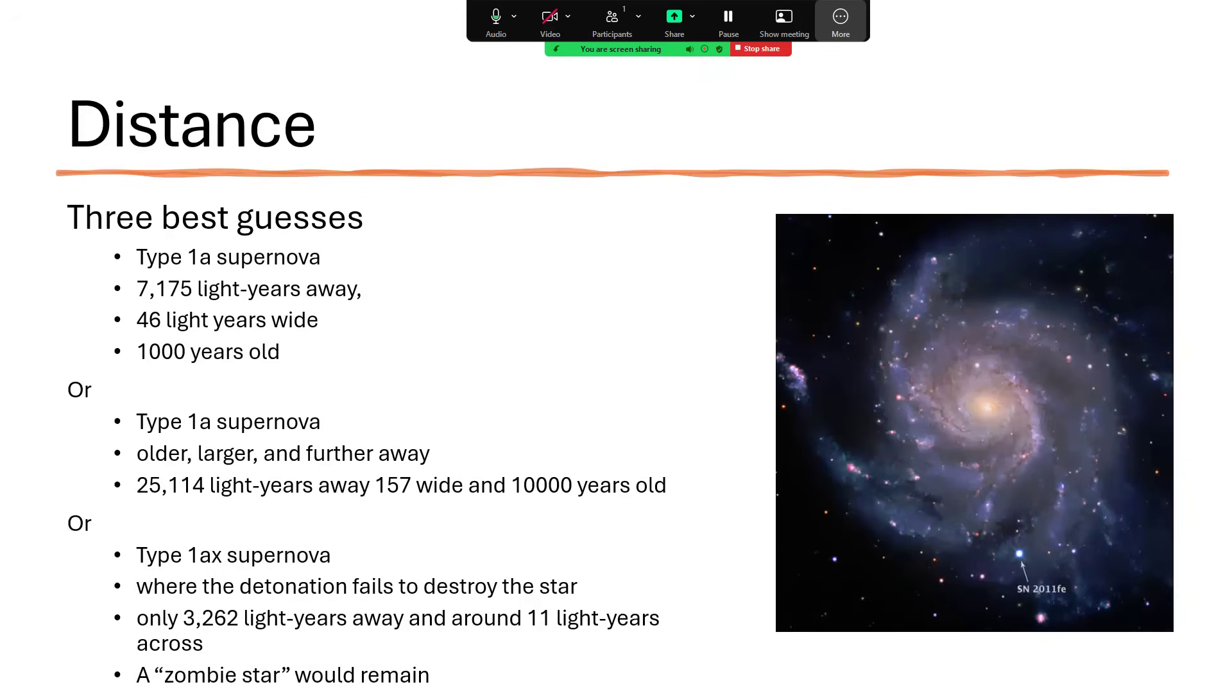But there are three different competing suggestions as to what's going on here. The first two are both saying that it's a Type 1a supernova—an exploding white dwarf star that's reached the end of its life, accreted more material onto it, hit the Chandrasekhar limit, and then exploded in a giant detonation, destroying utterly the white dwarf. But the first one reckons this was a thousand years ago and that Teleios, the shell of material giving off the radio waves, is 46 light years in diameter and 7,175 light years away. The other group are claiming that it's 25,000 light years away, 157 light years in diameter, and 10 times as old—10,000 years. So quite a big difference between them.